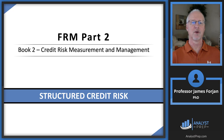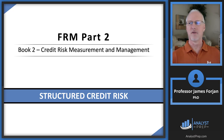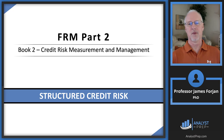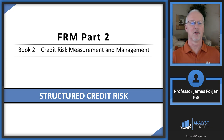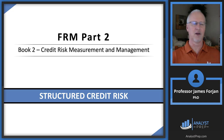This is FRM Part 2, Book 2: Credit Risk Measurement and Management, covering the chapter on structured credit risk. This chapter gets its name from capital structure. In the traditional sense, a business has a right-hand side of the balance sheet with debt and equity, but from a financial institution's perspective, the left-hand side holds mortgages, personal loans, business loans, and other loans. This chapter is a discussion on the risks associated with issuing debt and equity or owning, selling, or engineering credit products.